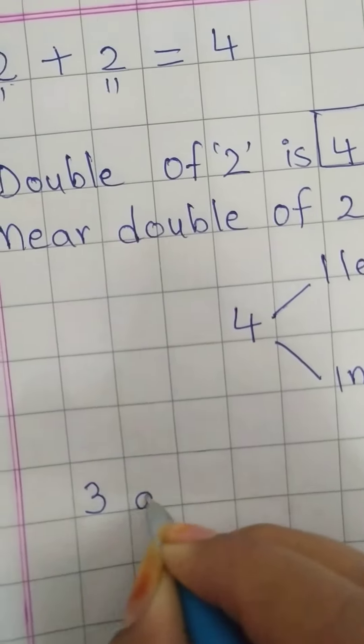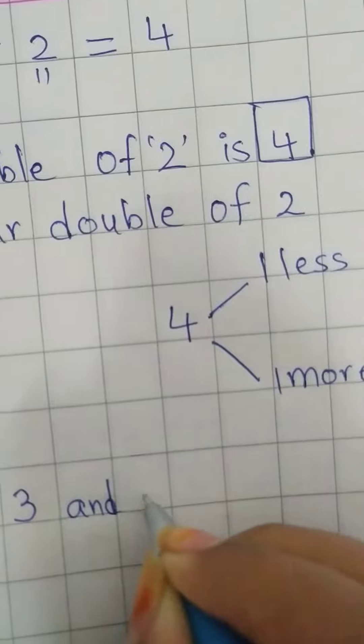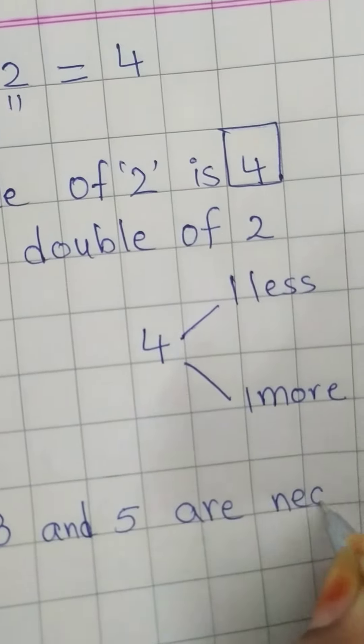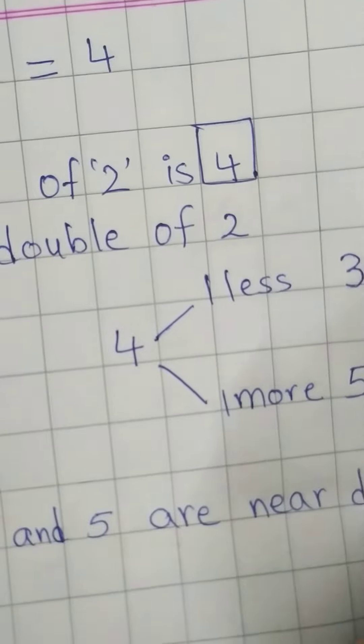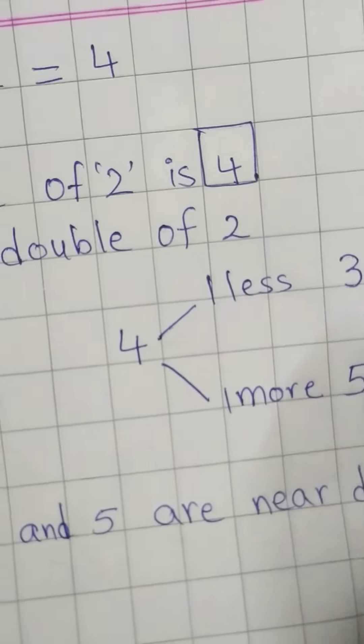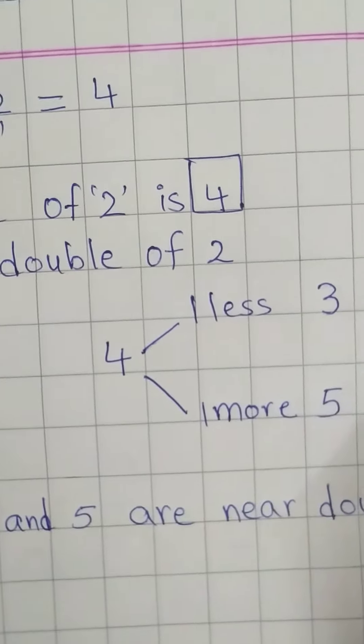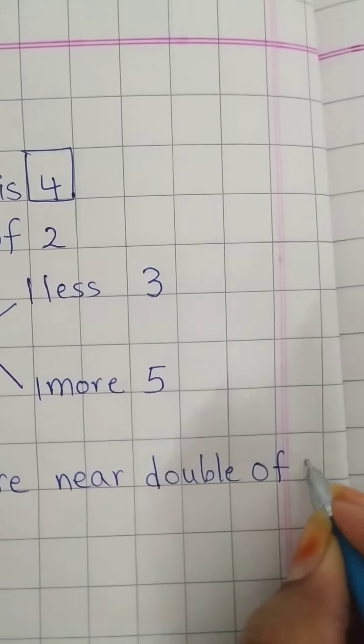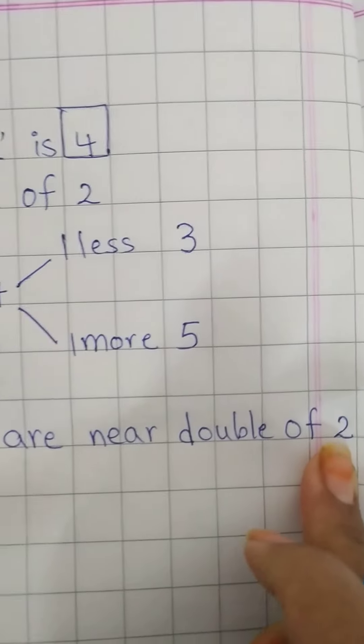3 and 5 are near double of what? 4 or 2? 2. Yes, it's 2. Double of 2. Okay?